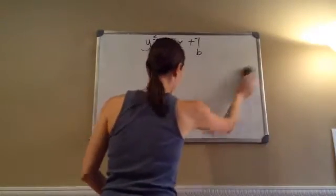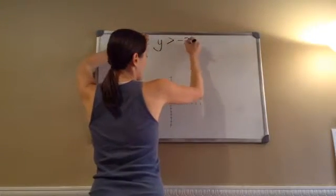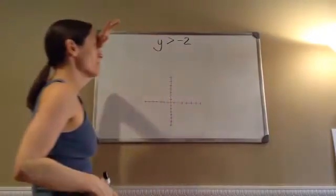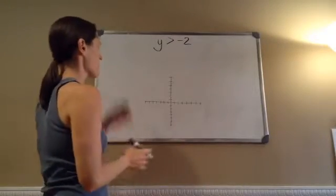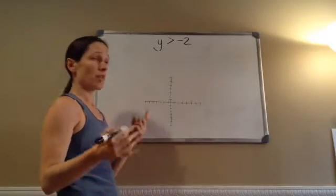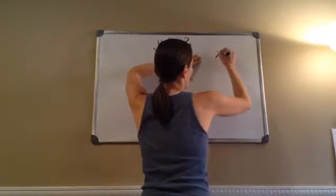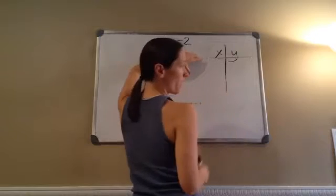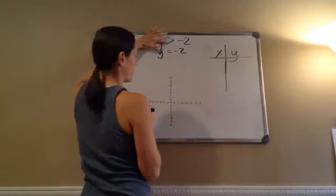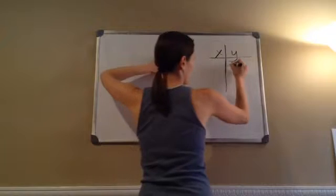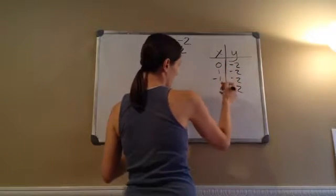Let's do 115.3. You can pause it and try this one on your own. Y is greater than negative 2. This one does not give us a y equals mx plus b. So in order to do this problem, you're going to give yourself an xy chart — this is kind of the old-fashioned way. We want to say y equals negative 2, and we'll change it to the greater than in a minute. Every time, y is going to be negative 2. So x is going to be 0, 1, negative 1, 3.